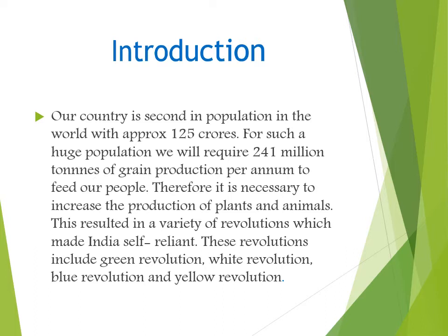The name of the chapter is 'Improvement in Food Resources.' The first question that comes to mind is: why is there a need to improve food resources? As you know, our country is second in population in the world with approximately 125 crores. For such a huge population, we will require 241 million tons of grain production per annum to feed our people. Therefore, it is necessary to increase the production of plants and animals.